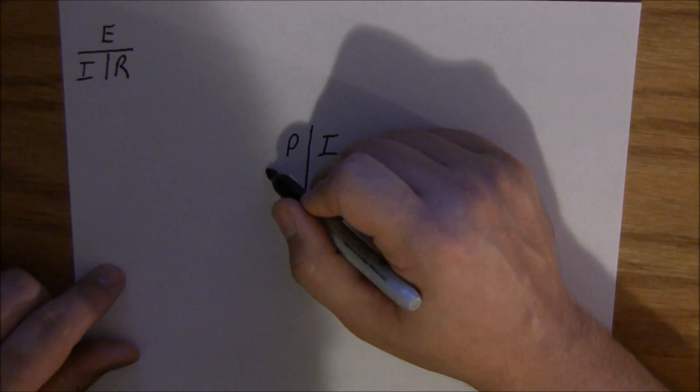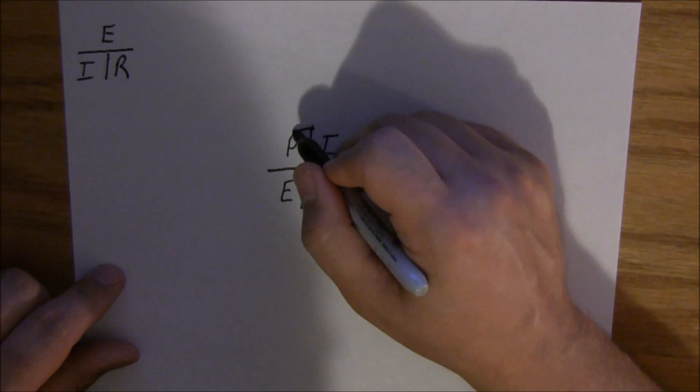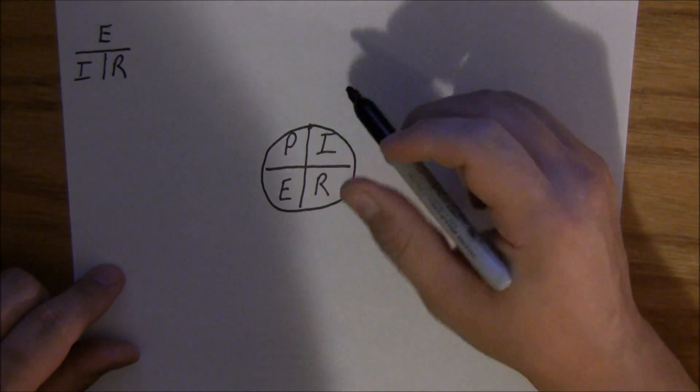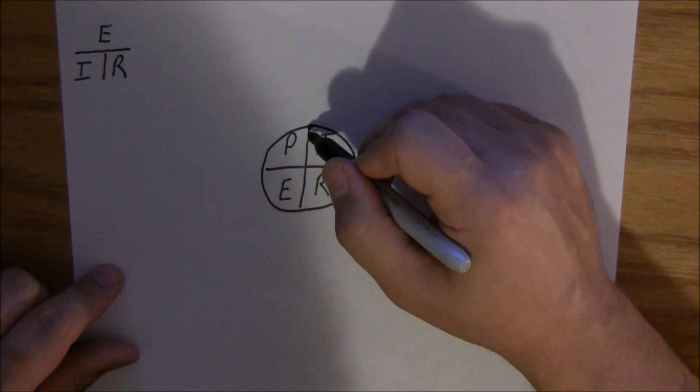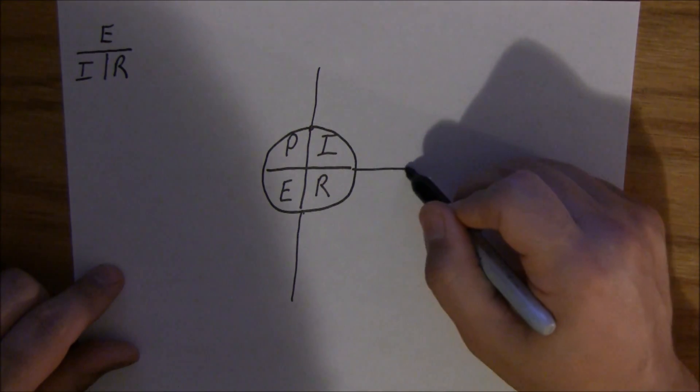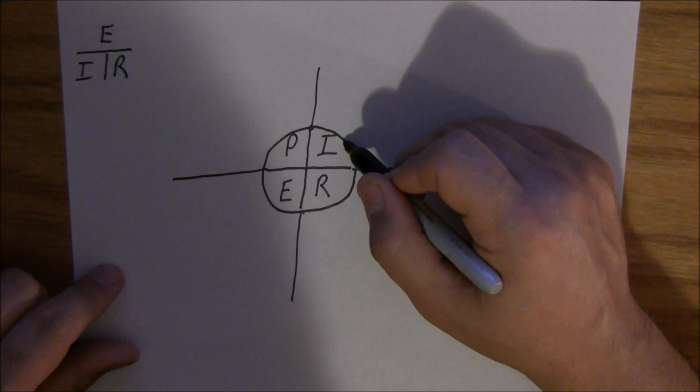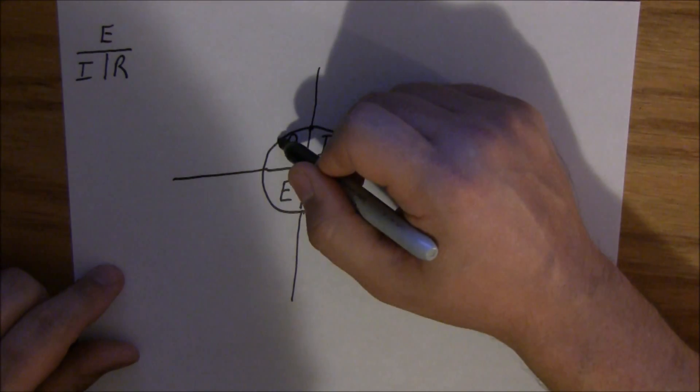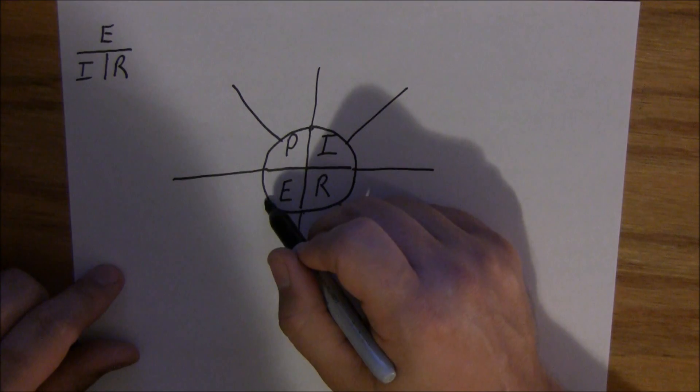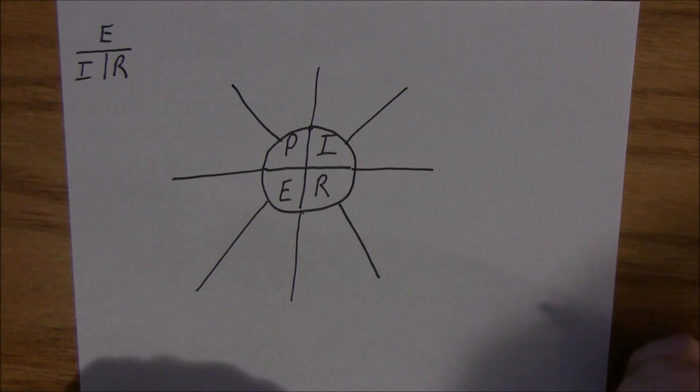Okay. And then, let's extend that up. Extend that down. Extend this out to the sides. And divide each one into three little segments there.